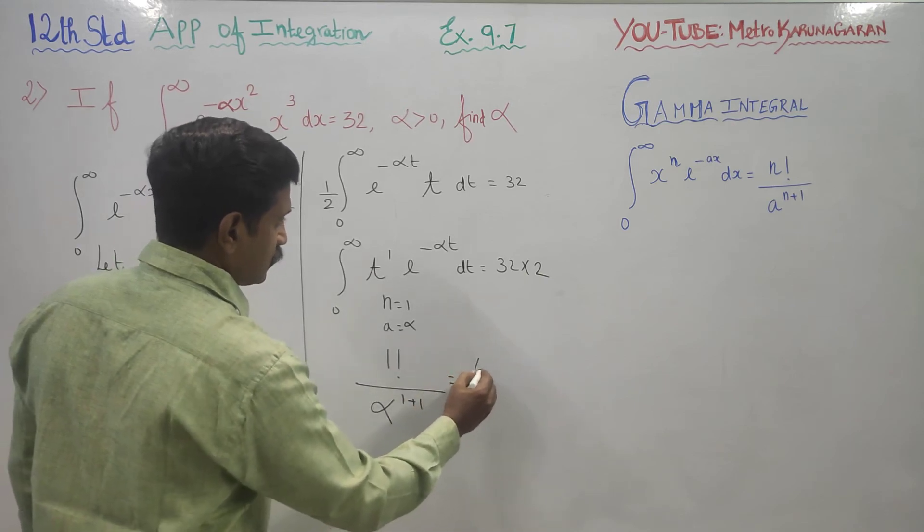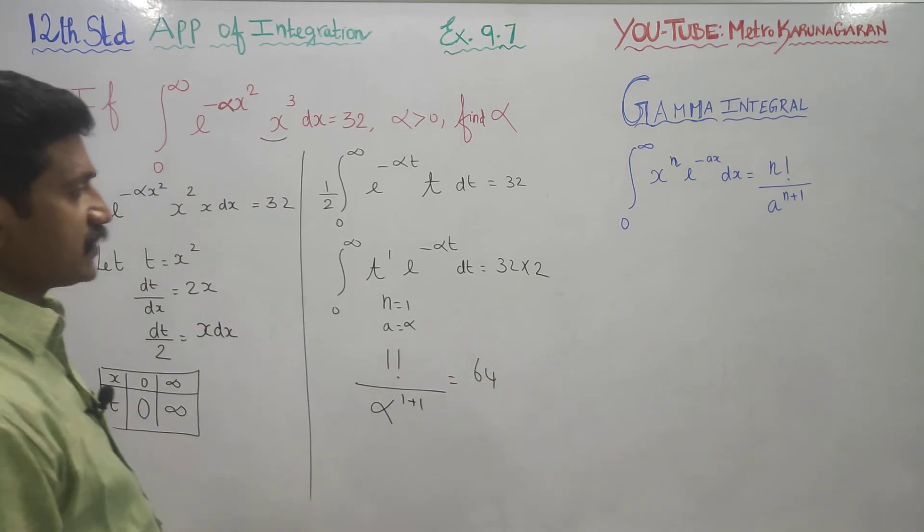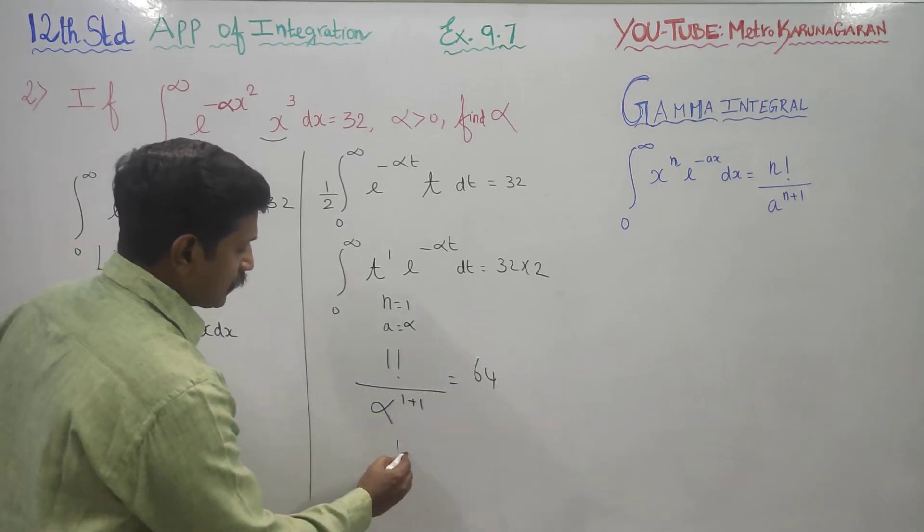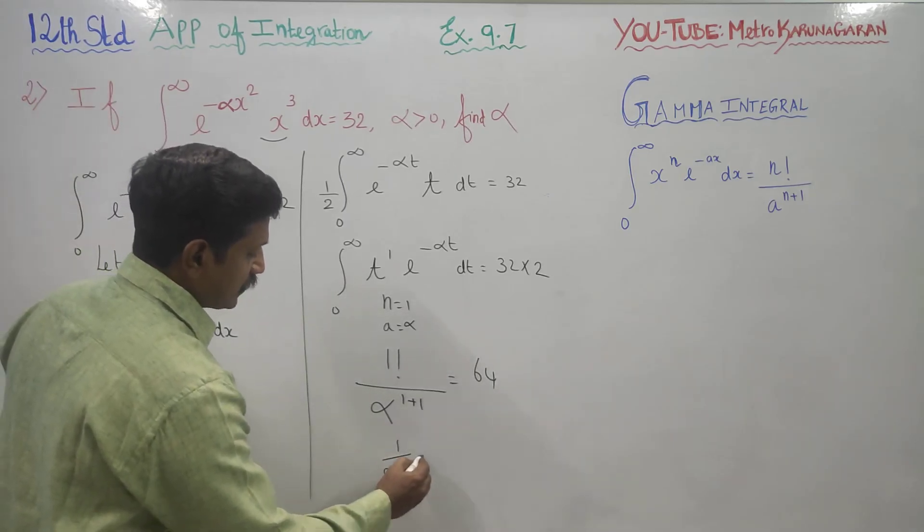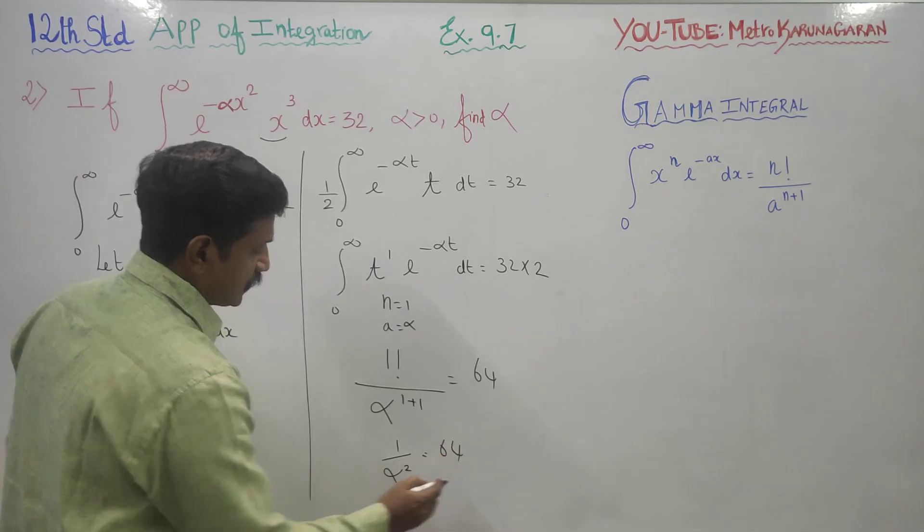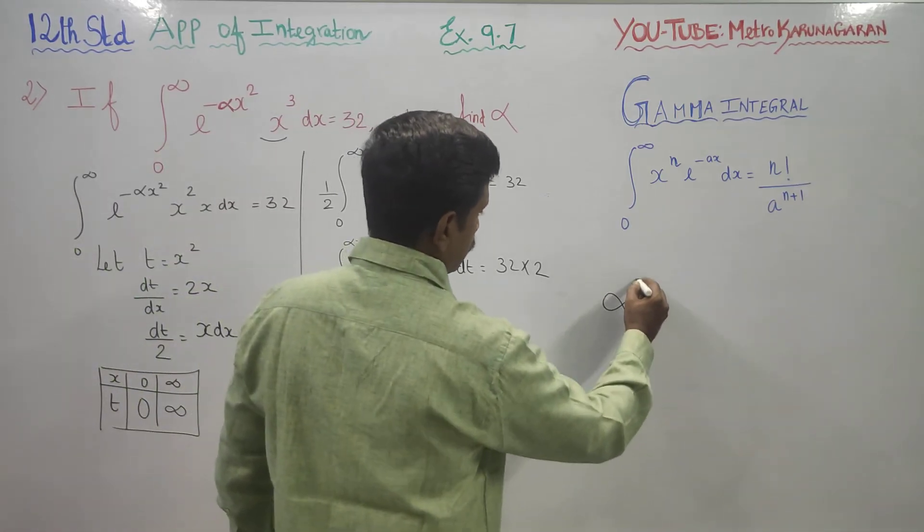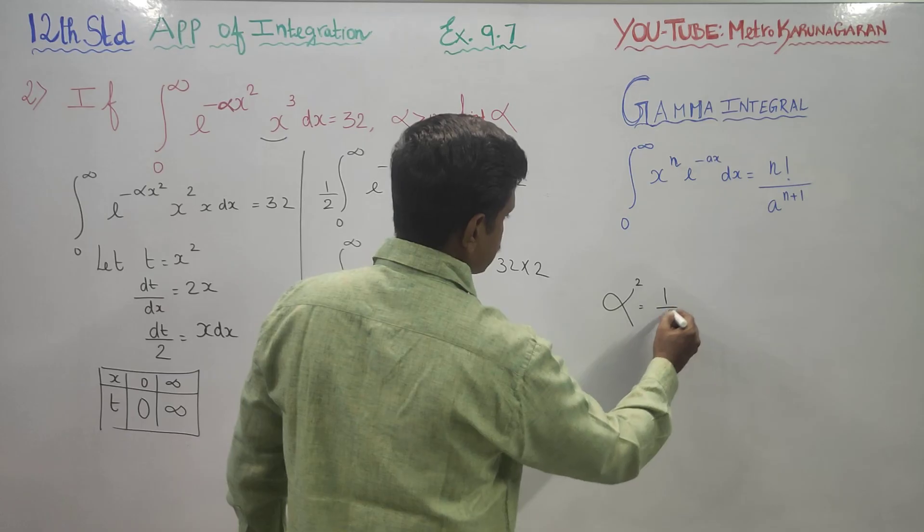1 factorial is 1, so 1 by alpha squared equals 64. Just change this to reciprocal, alpha squared equals 1 by 64.